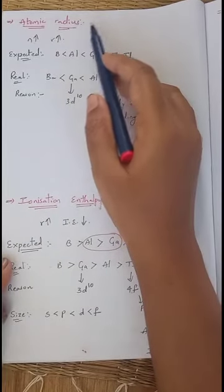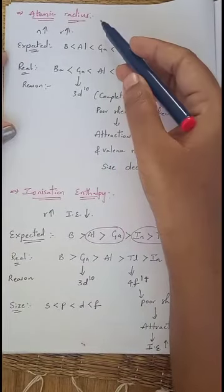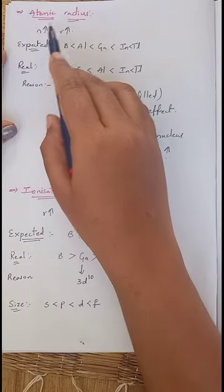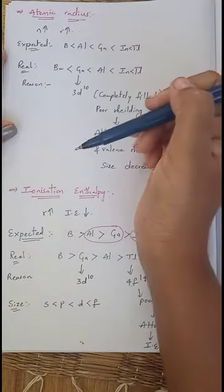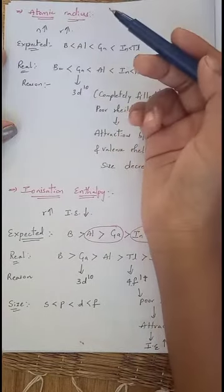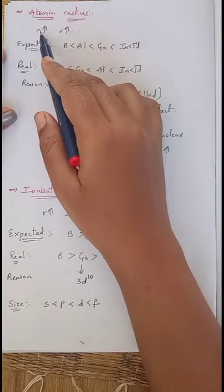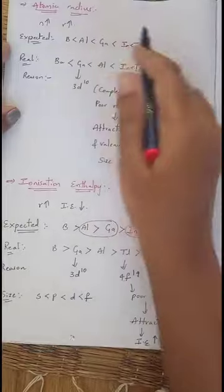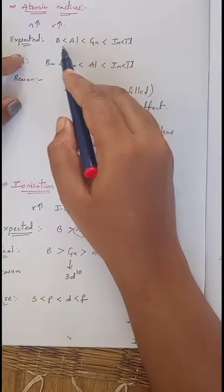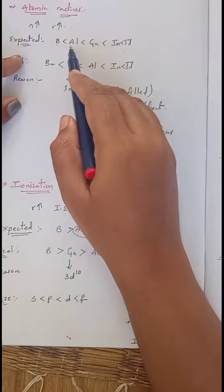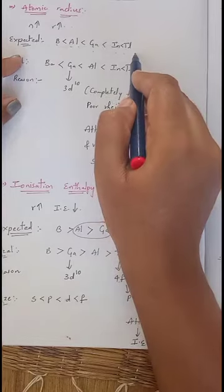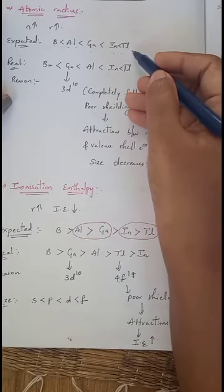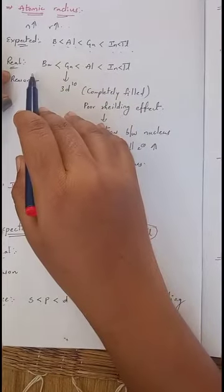Our next topic is atomic radius. We want to discuss the atomic radius of 13th group elements from top to bottom. When the number of energy levels increases, the radius also increases. Down the group, the number of energy levels always increases, so atomic radius should also increase. The expected order is: B < Al < Ga < In < Tl. Thallium has more energy levels around the nucleus and therefore has the largest atomic radius. However, the real order changes between gallium and aluminium.